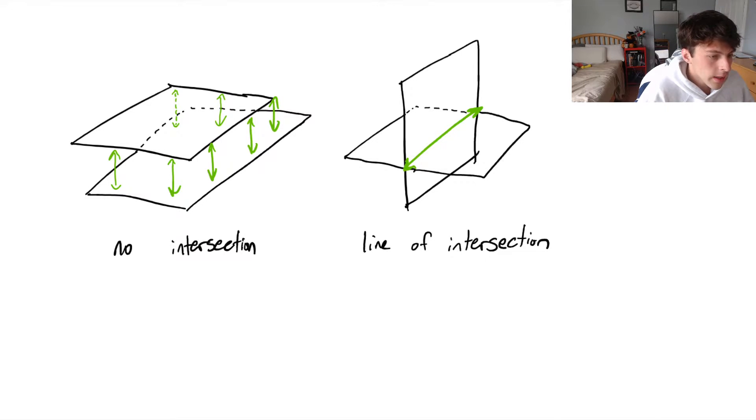In today's video, we're going to look at the intersection between planes. Specifically, we're looking at planes in R3, and I've drawn two schematics here. One of them, there's no intersection of the planes, and the other one, we have a line of intersection of two planes.